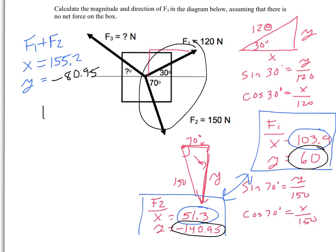So if that's F1 plus F2, what does F3 have to be to cancel that? It's going to have to be the exact opposite. So its x is going to have to be negative 155.2. And its y is going to have to be positive 80.95. Those are the components of F3. And if I want, I can draw these in. So that means the y here is 80.95 on this length. And that this length here is 155.2.